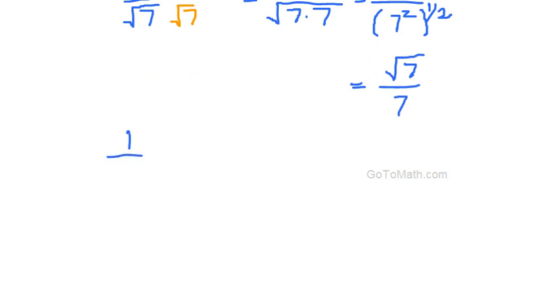So let's say we had 1 over the square root of 20. First thing I'm going to look at before I multiply this by the square root of 20 over the square root of 20, I'm going to see if I can actually break this down.